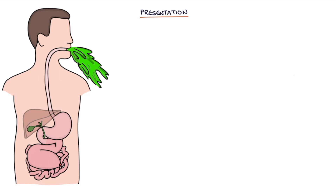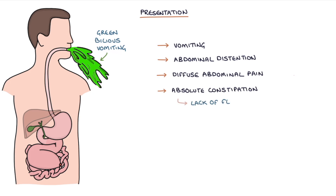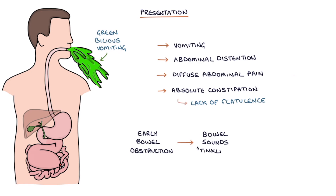The key features of bowel obstruction are vomiting — particularly green bilious vomiting — abdominal distension, diffuse abdominal pain, absolute constipation and a lack of flatulence. In early bowel obstruction, the bowel sounds may be described as tinkling.